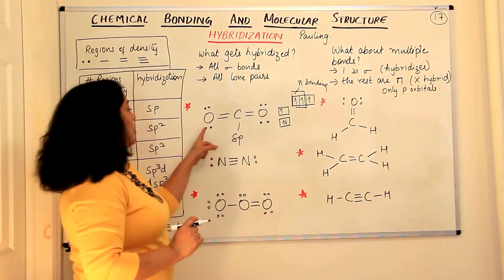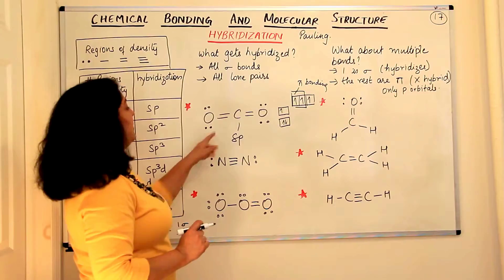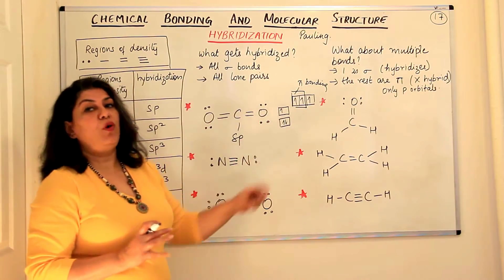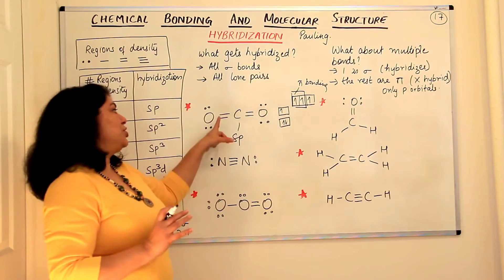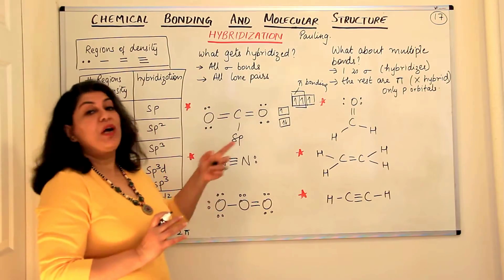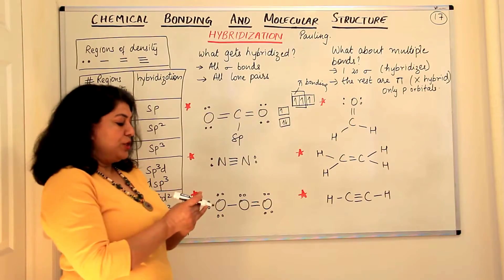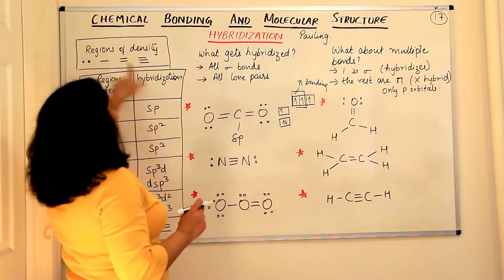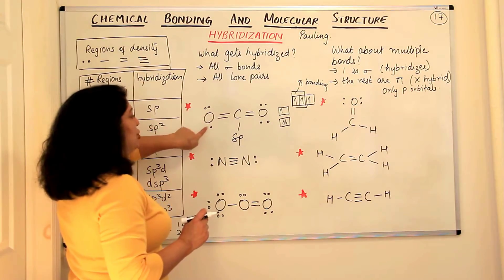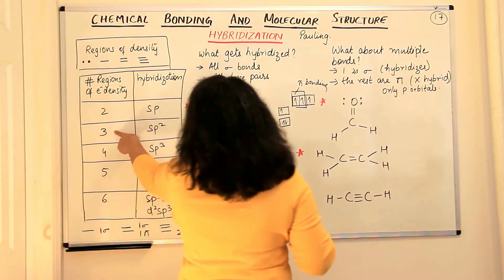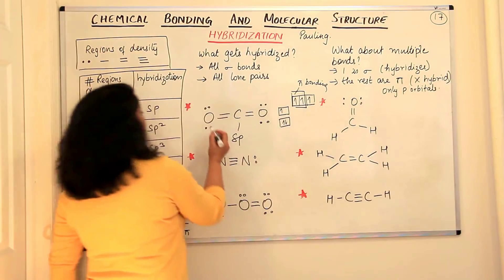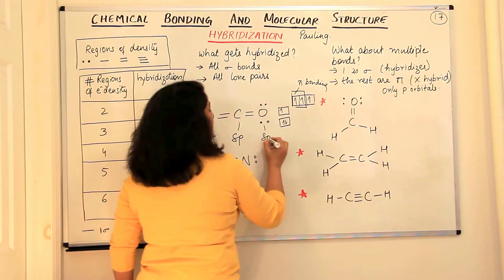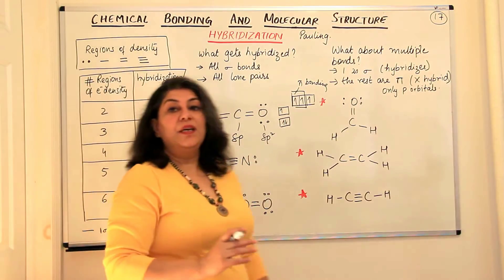Now let us come to the oxygens. Oxygen in CO₂ has two lone pairs and one double bond. For the purpose of hybridization, we count only sigma bonds and lone pairs. So oxygen has three regions of electron density: one sigma bond and two lone pairs. When you have three regions of electron density, the hybridization is sp2. So oxygen is sp2 hybridized.